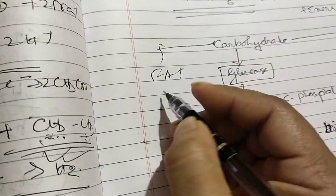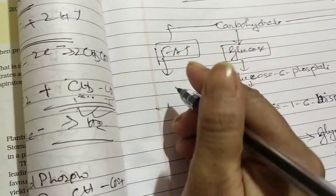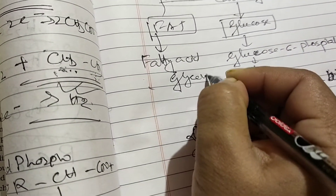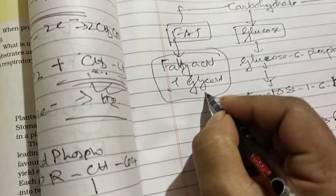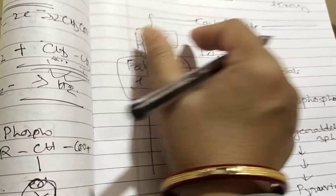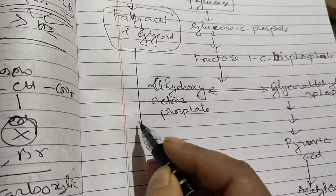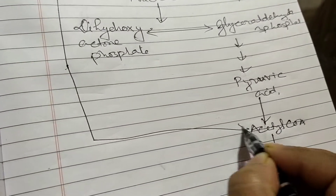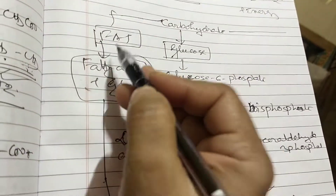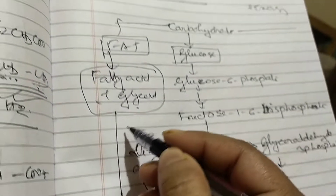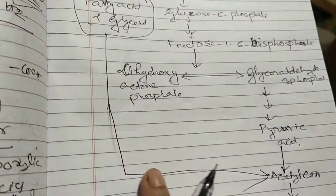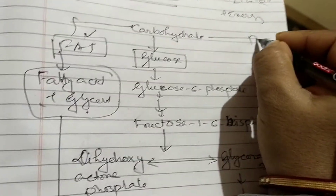If we take fat: fat dissociates into fatty acids and glycerol. When the cell needs to derive energy, this fatty acid and glycerol are converted into acetyl-CoA and then enter the Krebs cycle, releasing energy — that is the catabolic process. But if fat needs to be synthesized, this acetyl-CoA will be withdrawn from the cycle and fat will be synthesized — that is the anabolic process. So both catabolic and anabolic processes occur for fat.